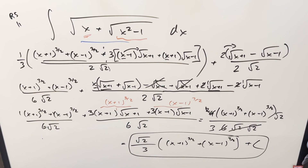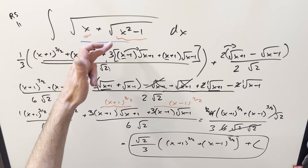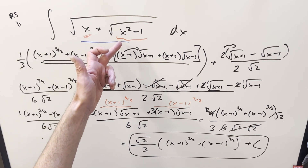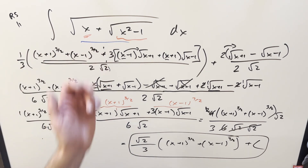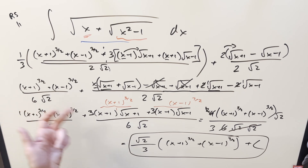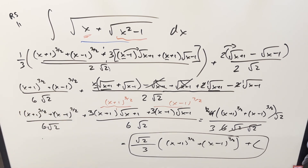I thought that was a really nice alternative method. If you didn't have to do the algebra, it's probably just as quick or maybe quicker than the other approach, since hyperbolic trig substitutions work so well when you've got something like this in the radical. I don't really see too many shortcuts with the algebra, but maybe I missed something. Okay, that's it for today — thanks everyone for watching, have a good day.